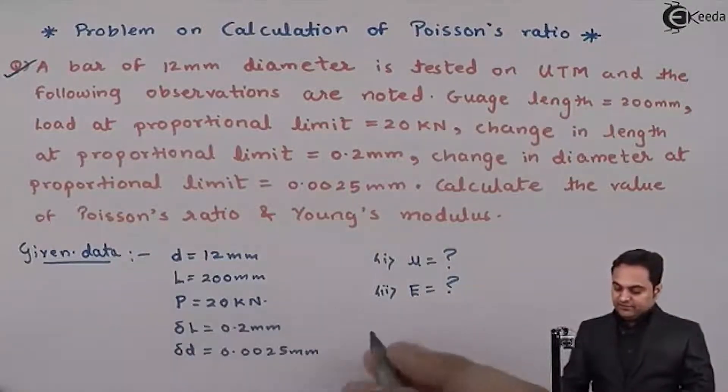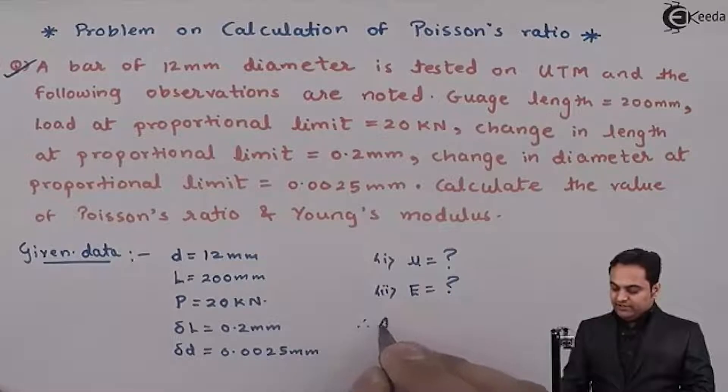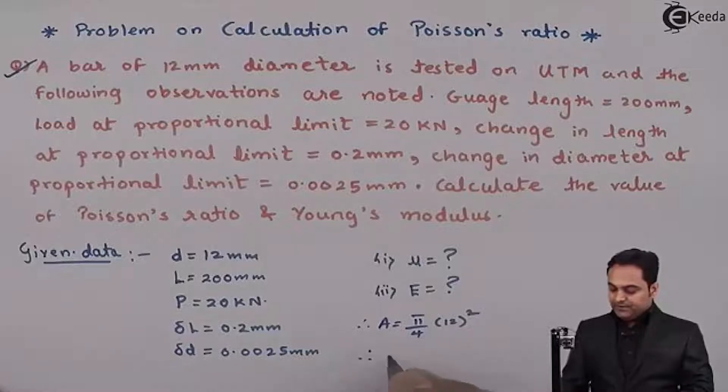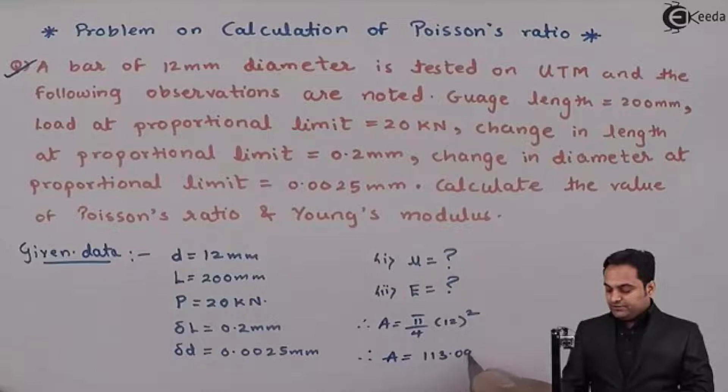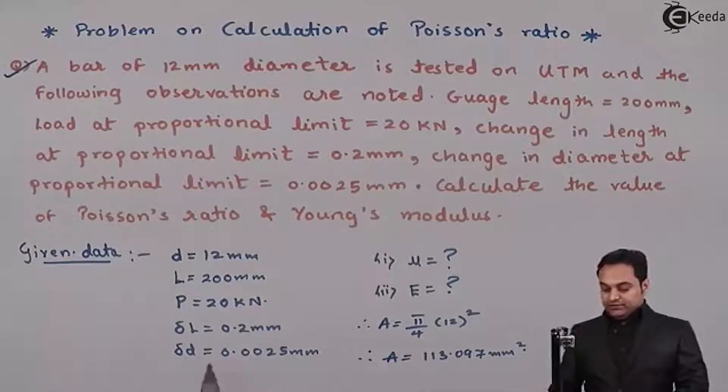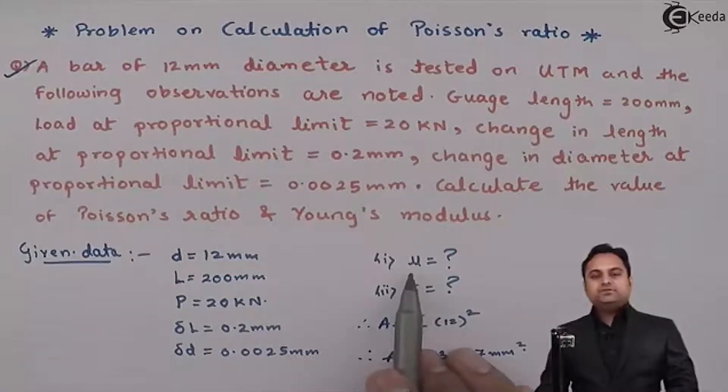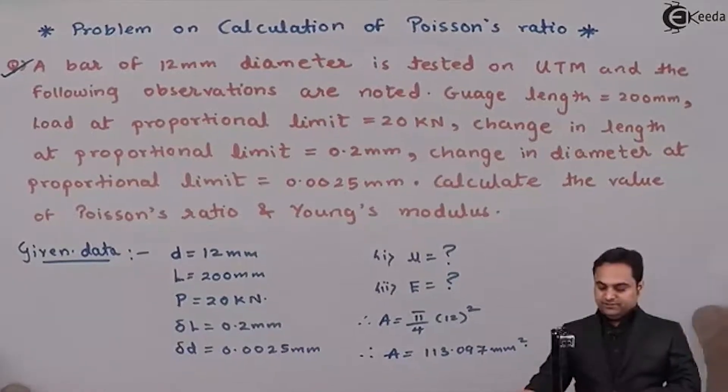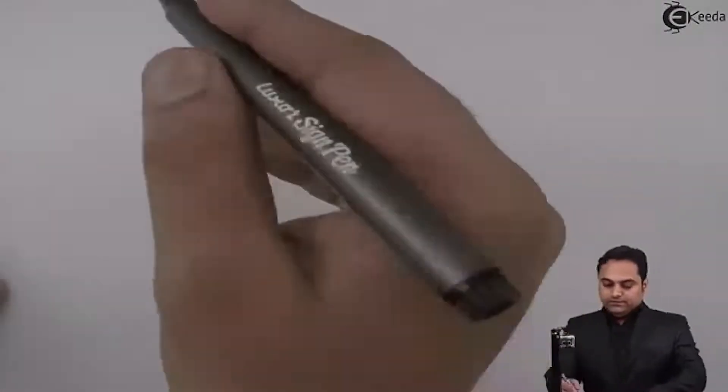Since the diameter is given, first I'll find the area of the rod in the data itself. So it is pi by 4 into 12 square, and therefore area comes out to be 113.097 mm square. So here we have to calculate mu which is called as Poisson's ratio. I'll start with the solution part.